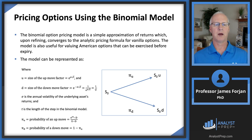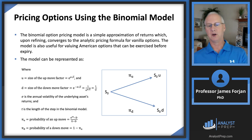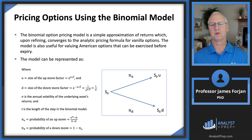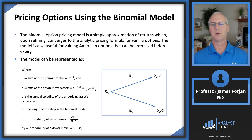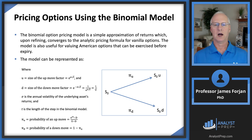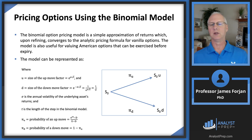The probability of an up move is defined as e raised to RT — continuous compounding — minus the down factor D, divided by the difference between U and D. These are the risk-neutral probabilities of up and down moves. This really goes back to computing a weighted average return — it's a simple model.